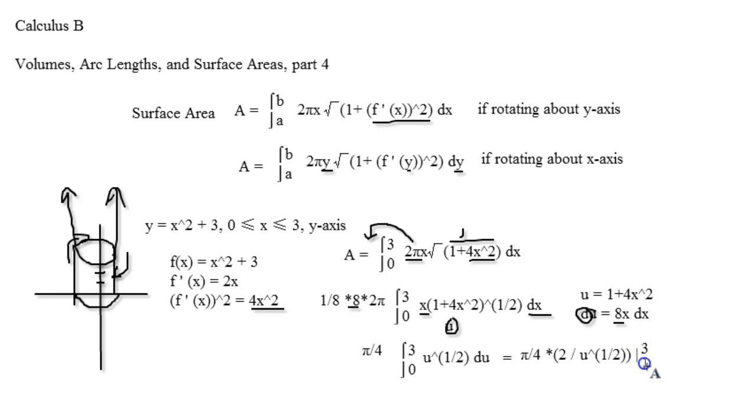Once again, you just go back to the beginning, and you replace u with 1 plus 4x squared. So, I'm going to start to integrate it. So, we're going to have π fourths as our first part times 2 divided by the square root of 1 plus 4 times 9. Remember, I'm just plugging that in. And, then, we're going to minus 0, because, obviously, that's the other part. It's just going to turn into a bunch of 0s.